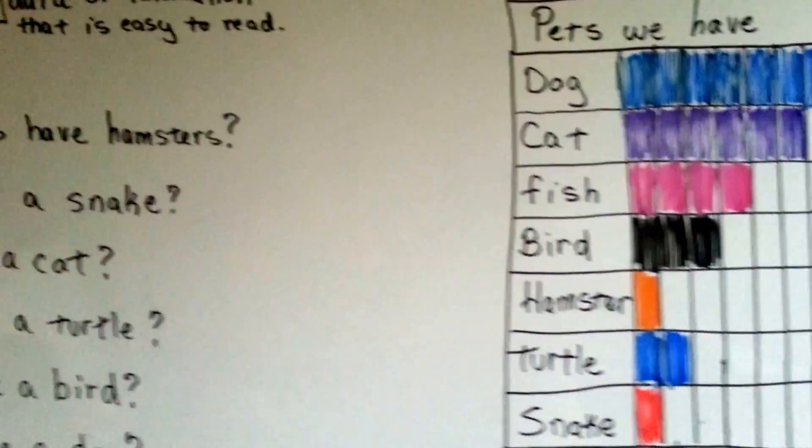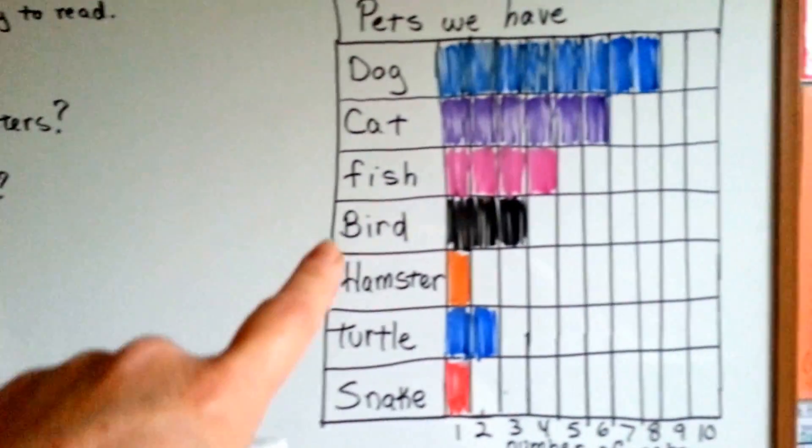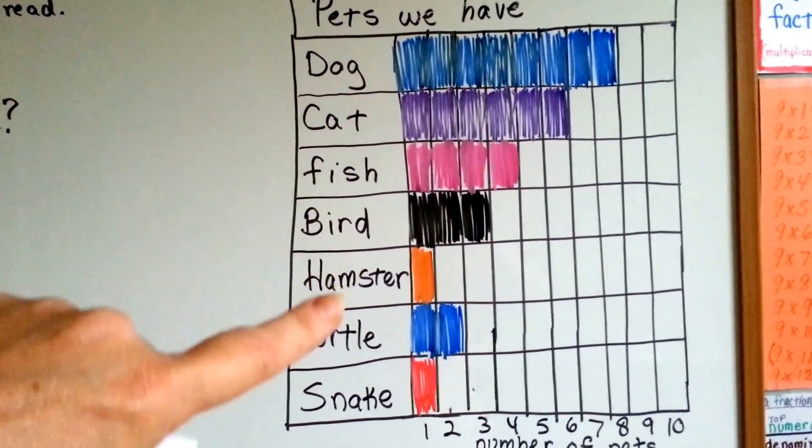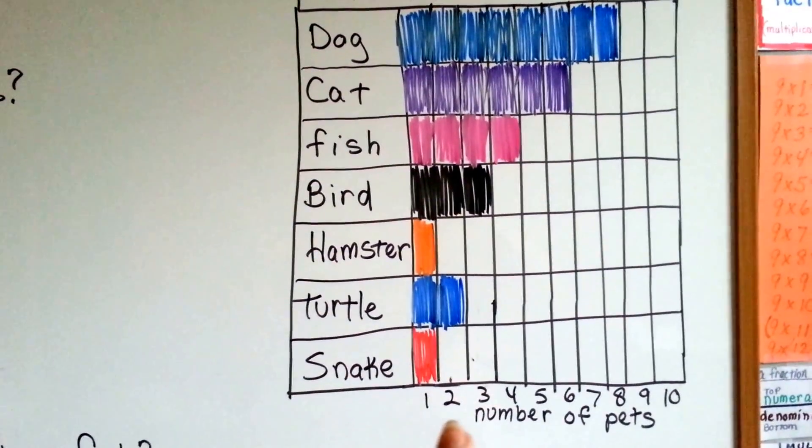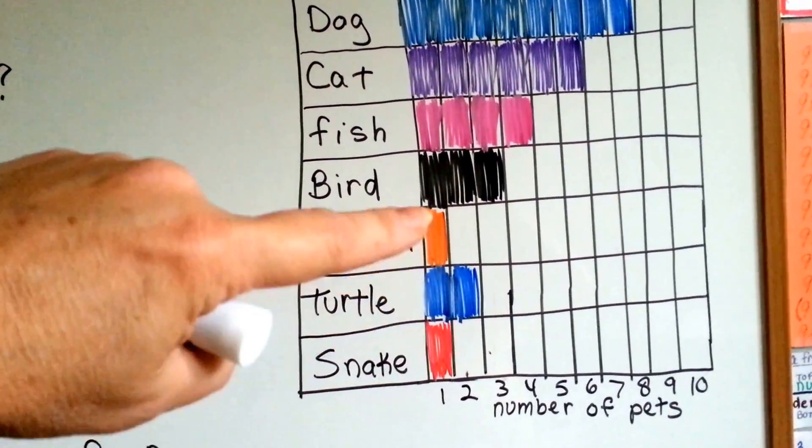So, I have some questions here. How many students have hamsters? We look for hamsters coming down the list and then here's the number at the bottom. So hamster has only one box filled, so only one student has a hamster.